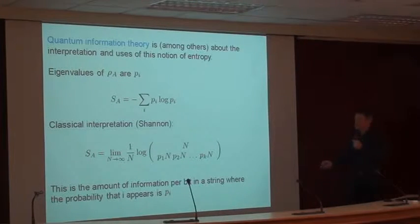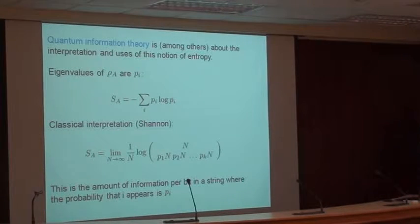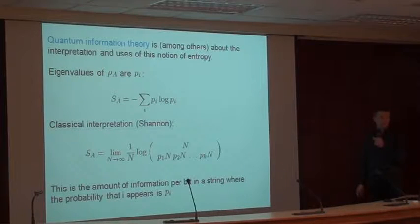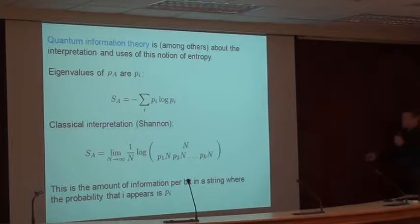This expression can be written in terms of a generalized binomial coefficient. It is the combinatorial factor relevant when you have a jar with colored balls: a fraction p_1 of color 1, p_2 of color 2, and so on. This is roughly the number of different ways you can choose colored balls. Taking the large-N limit and the log, you get precisely S_A. It tells you about the amount of information in a string of colored balls with probabilities p_1, p_2, p_3, and to what extent you can compress the information in a random string of colored balls.